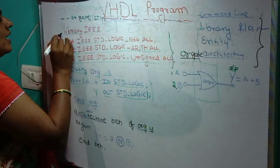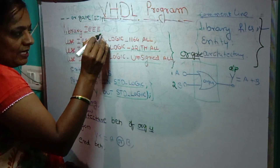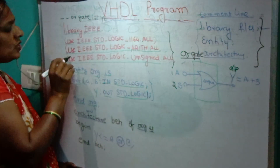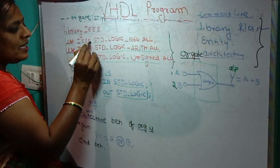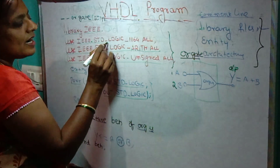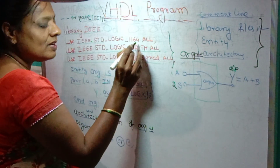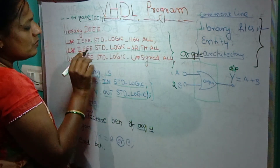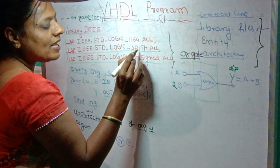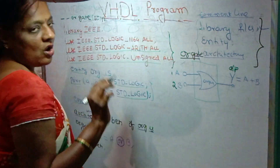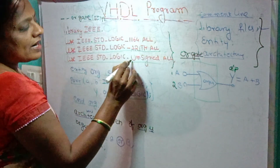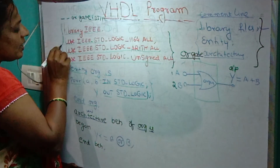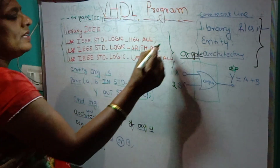The four lines are: first, 'library IEEE'; next, 'use IEEE.std_logic_1164.all'; next, 'use IEEE.std_logic_arith.all'; and next, 'use IEEE.std_logic_unsigned.all'. These four lines should be present in every VHDL program — this completes the first part, that is the library files.